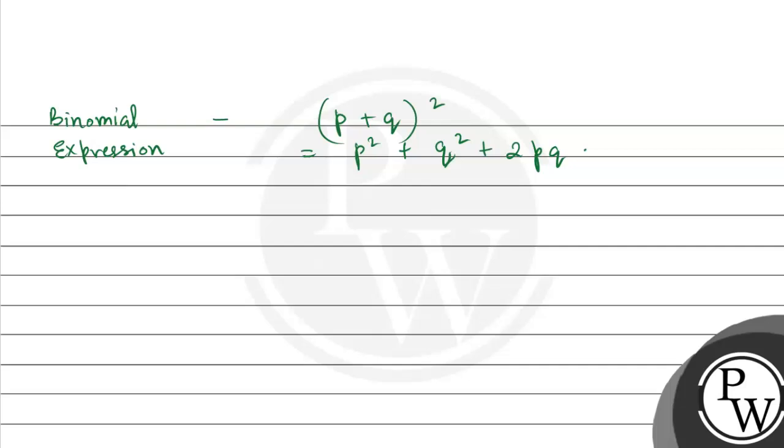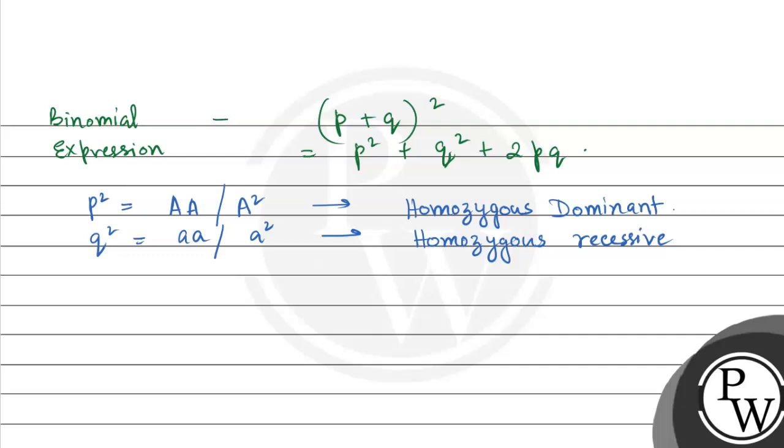So, where p² represents the dominant allele, that is both capital A or A², this condition is called homozygous dominant condition. q² represents aa or a², and it represents homozygous recessive. And 2pq represents the heterozygous condition, that is capital A and small a together.